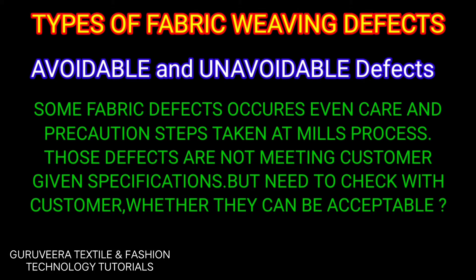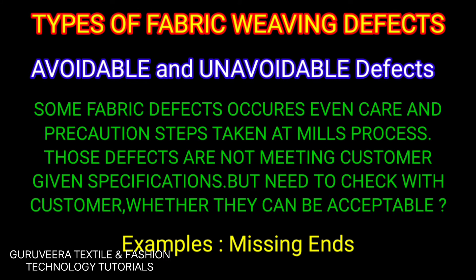Some fabric defects occur even when care and precaution steps are taken at the mill's process. Those defects may not meet customer-given specifications, but we need to check with the customer whether they can be acceptable. Examples include missing ends.